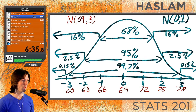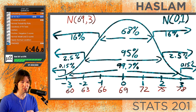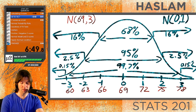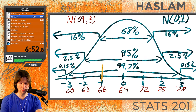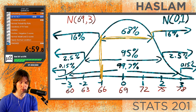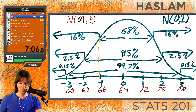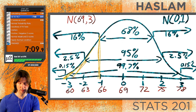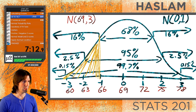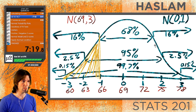Some questions could ask: what percent of individuals do we expect to have a height above 66 inches? If you've drawn this out — which I suggest doing on the test — you'd know 66 inches has a z-score of negative 1. You can figure out that 68 plus 16 is 84. Since 16% is below 66 inches, 84% is above. Being able to draw this and understand what's going on is key.